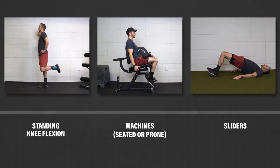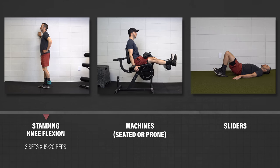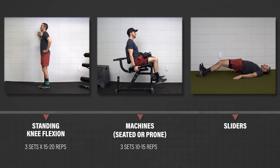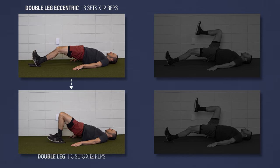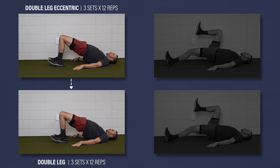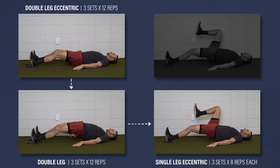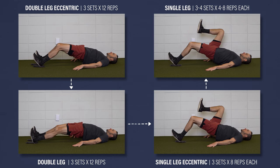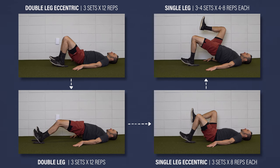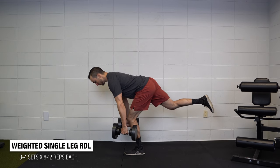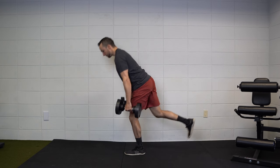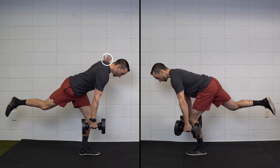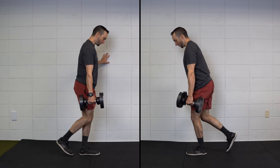For the hamstrings, the first option emphasizes knee flexion. You can perform standing knee flexion with an ankle weight, use machines, or hamstring sliders. Start with double leg eccentric sliders: bridge up, slowly straighten your knees, lower down, and repeat. Build up to moving through your full range of motion, then progress to double leg sliders keeping your hips up the whole time. Next, move on to single leg eccentric sliders, and finally to single leg sliders. The second option is a weighted single leg RDL, which focuses on hip extension. Keep a slight bend in the knee and hinge at the hips, lowering until your chest is about parallel to the ground.